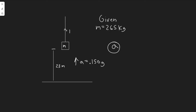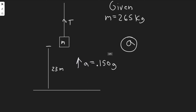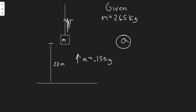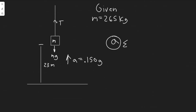We know it's going to have some tension T acting upwards, and we want to draw the free body diagram in order to solve for T. We have to label all the other forces acting on it. There's only one other force, which is the force due to gravity, equal to mg. So these are the two forces acting on it. We solve for T by summing the forces along the y-axis: the sum of forces equals mass times acceleration (F = ma).